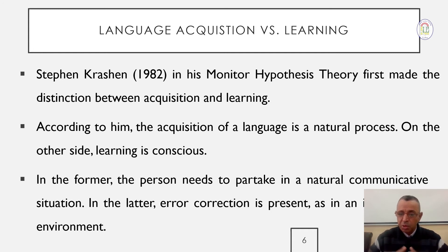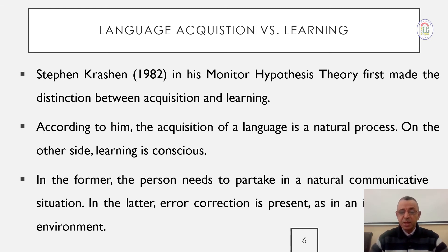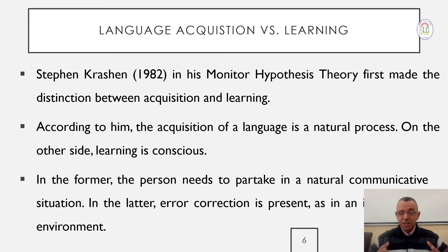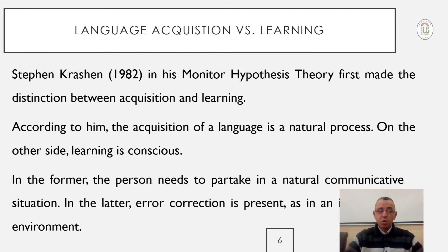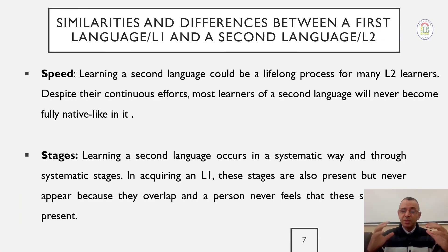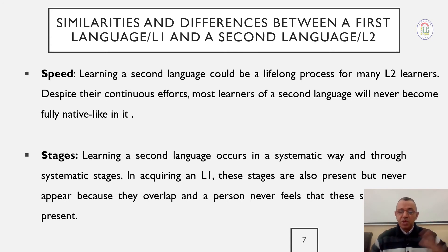However, learning is something that is very conscious. It's systematic — it needs preparation, readiness, willingness, gradation, and assistance. Of course, in L1 there is assistance, but it's not like in L2. Assistance in L2 is more significant; you need a teacher, for example. Acquisition is that act that we do without any preparation, unlike learning. This is the main difference between acquisition and learning.